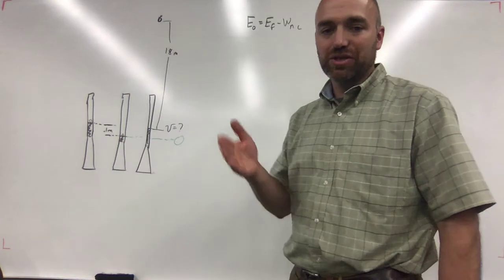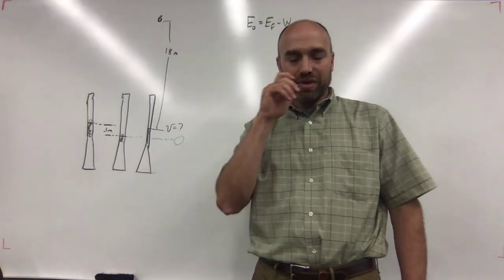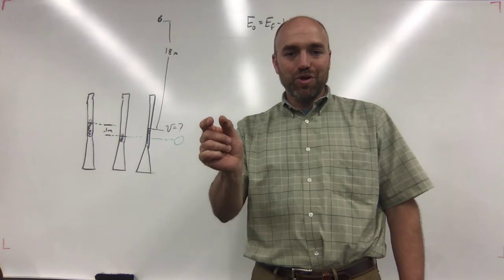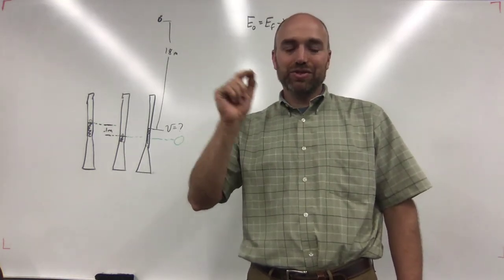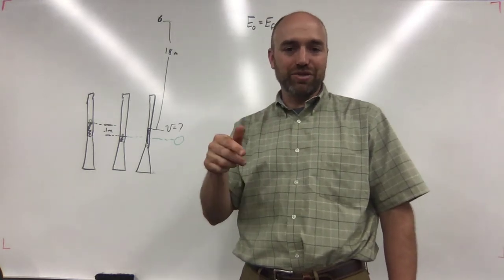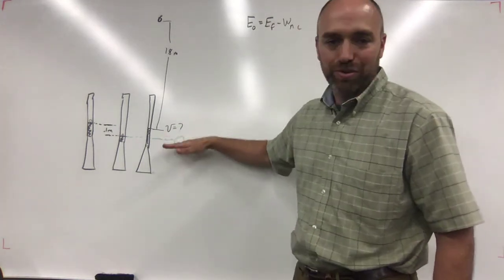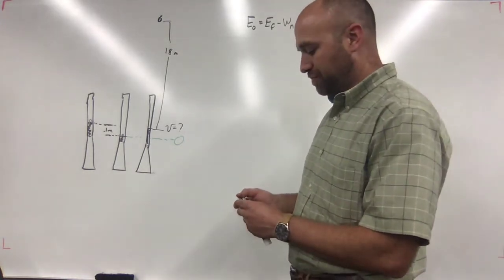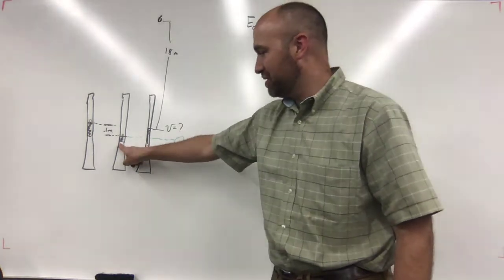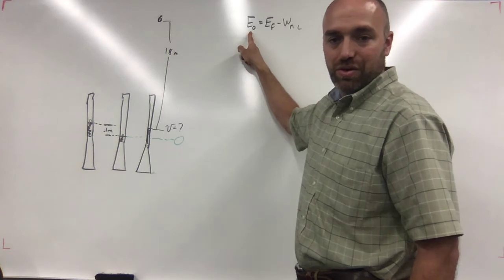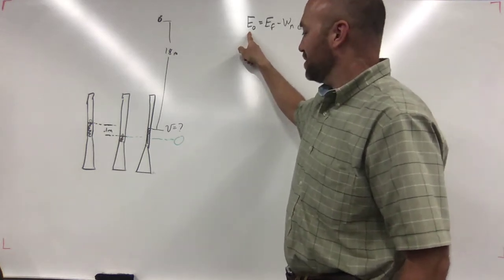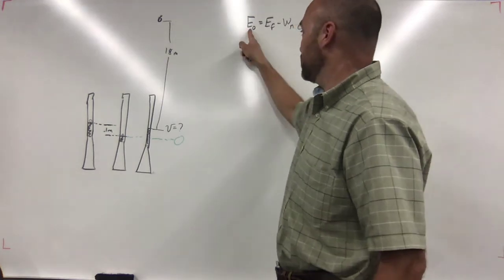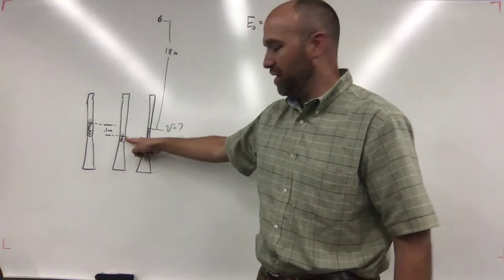Let's do Part B again, because I noticed your answer was slightly off from their answer — close enough that it got a green check, but I think you made a slight error that the computer didn't catch. That error is buried in where you put the zero. So let's call this the lowest point zero, make this the starting point — that's energy initial — and then make this the final point — that's energy final.